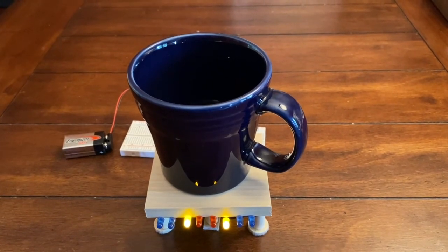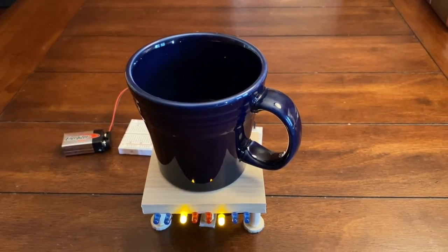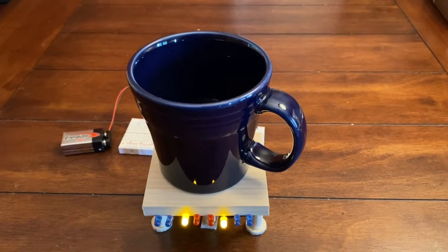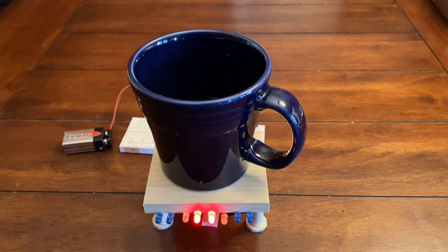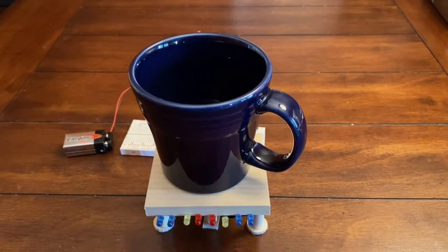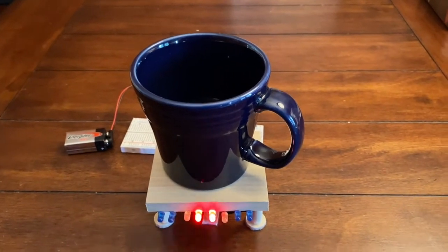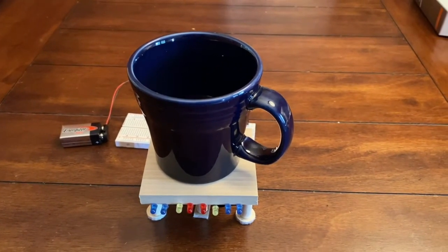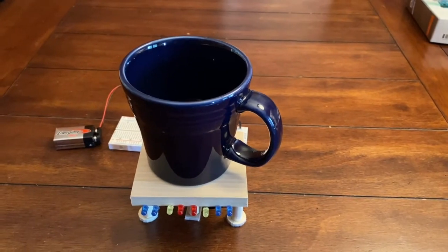All right, so the yellow lights are blinking slowly to kind of remind us that we're getting close to the deadline to drink. Oh, and now we're past it, so the red lights are scolding us for not drinking in time. So now they went off, and it's just going to reset and wait another 20 minutes.